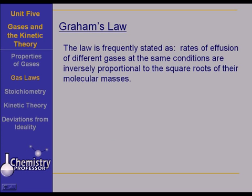The law is frequently stated like this: rates of effusion of different gases at the same conditions are inversely proportional to the square roots of their molecular masses. In other words, the heavier the gas is, the slower it effuses; the lighter the gas is, the more quickly it effuses. So the rate of A times the square root of the mass of A is equal to the rate of B times the square root of the mass of B, where mass refers to molecular mass. Rate is always going to have to be something per unit time — it may be reciprocal time, or liters per minute — but it must be per unit time.